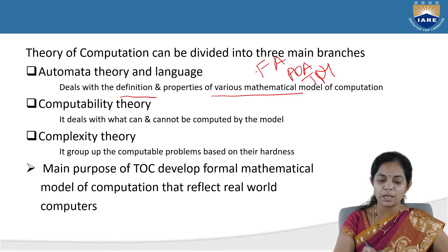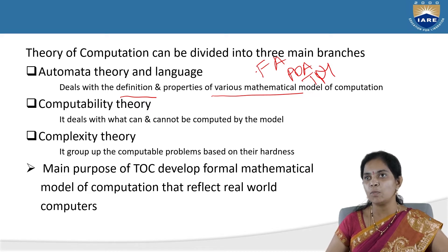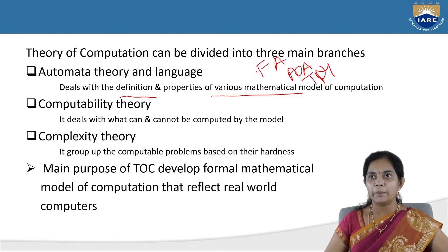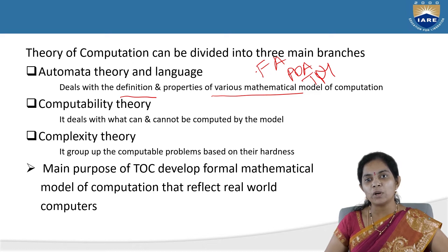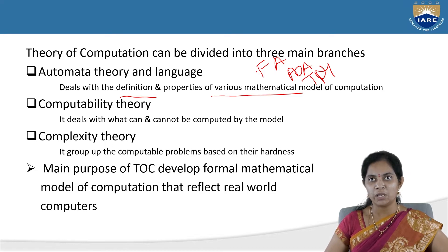Computability theory deals with what can and cannot be computed by the model — the limitations of every model. Previously we discussed mathematical models of computation; every model has its own benefits and limitations, and this is what computability theory deals with.